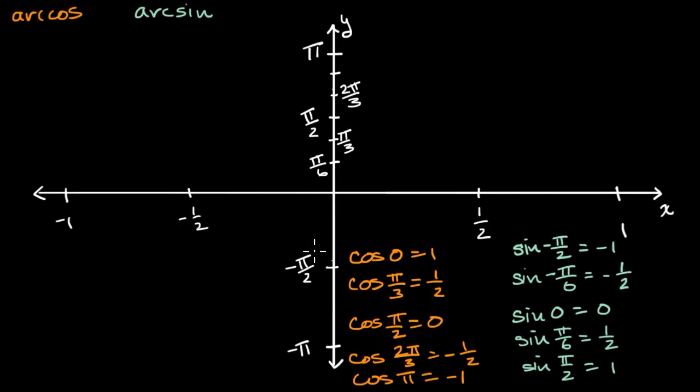And as we already know, arc cosine and arc sine can be viewed as the inverses of cosine and sine. So for example, if cosine of zero is one, then that means that the arc cosine of one is zero. So I could write that the arc cosine of one is equal to zero.